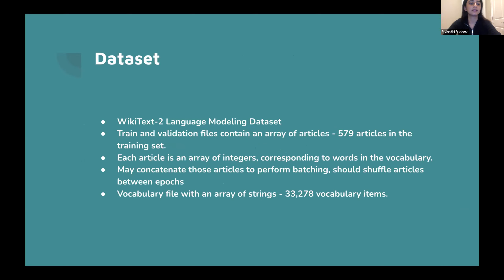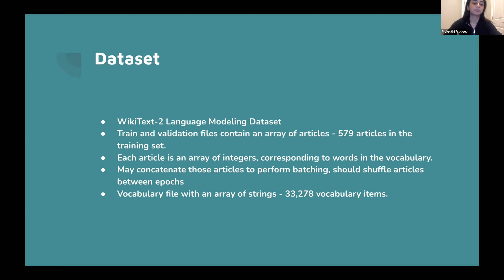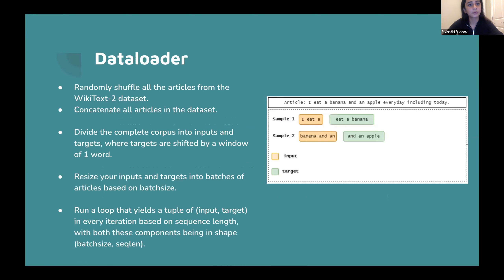The dataset is WikiText-2, a language modeling dataset. You'll receive training and validation files containing arrays of articles — 579 articles in the training set, each an array of integers representing words from the vocabulary. You can concatenate articles for batching, and we recommend shuffling articles between epochs during training. The vocabulary file is an array of strings with 33,278 vocabulary items.